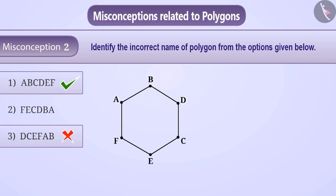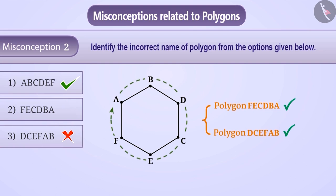The correct understanding is that we can name a polygon with the help of vertices. While naming, we can start from any vertex and progressing in one direction on the boundary. Write the vertices in sequence one after the other. In this way, the name of the given polygon can either be FECDBA or DCEFAB. Both ways are correct. Therefore, option 2 and option 3 are correct names. Hence, they cannot be the answer to the given question.